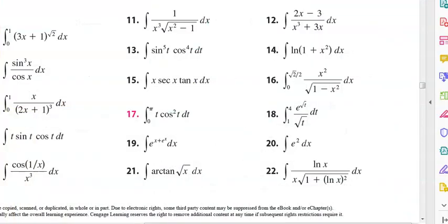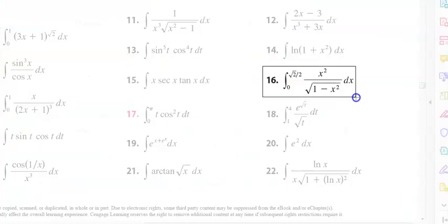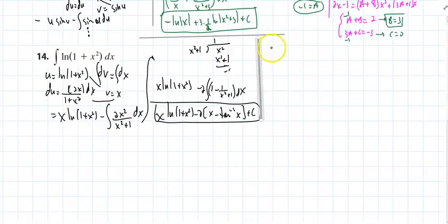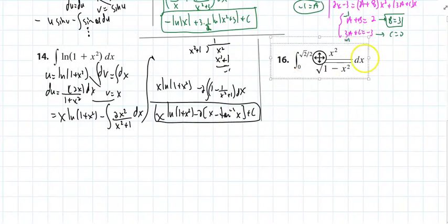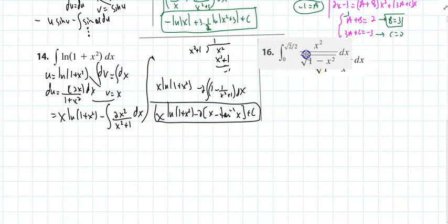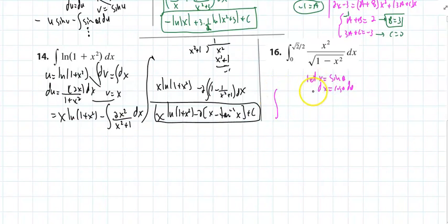Next problem, I want to look at problem number 16. I'm trying to figure out how to do a u sub on this and it doesn't work. So the good news is I am giving you those tables. In this case, when I see this, I already know what to do. I'm going to let x equal the sine of theta, dx is going to be the cosine of theta d theta, and that would be the integral. Let's see how this works. x, that's the sine squared of theta over the square root of 1 minus the sine squared of theta times cosine of theta d theta.